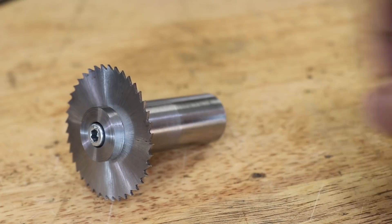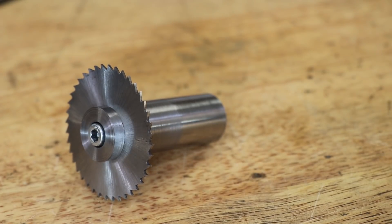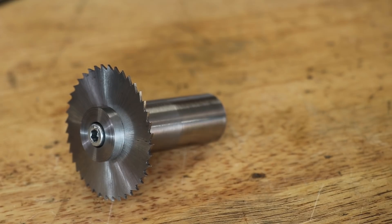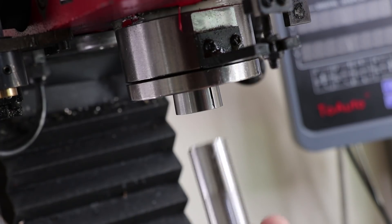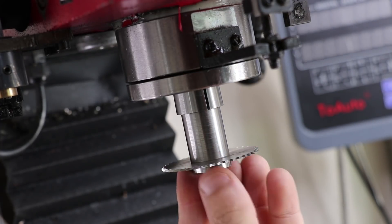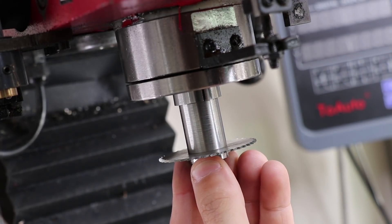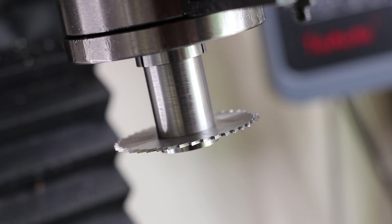I didn't get any footage of me assembling it, but the tool assembles by sandwiching the slitting saw between the cap and the main body.